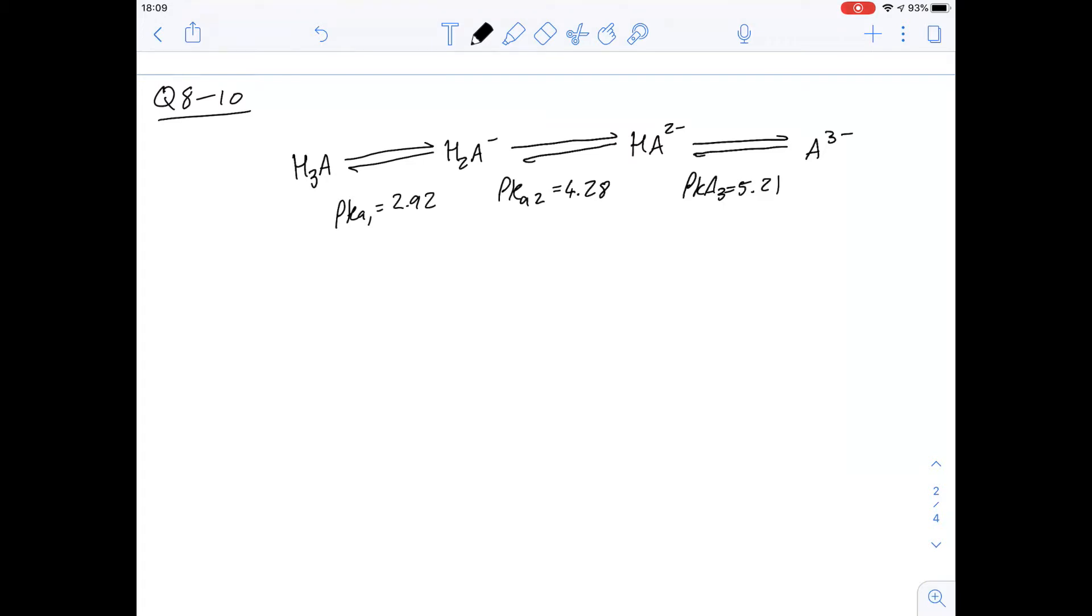I've drawn them out here. Question 8 says what is the predominant species in a 0.1 molar solution of citric acid at pH 5? So let's think first of all what pKa actually means. So these are the pH values at which these two species are going to be in equilibrium equally.